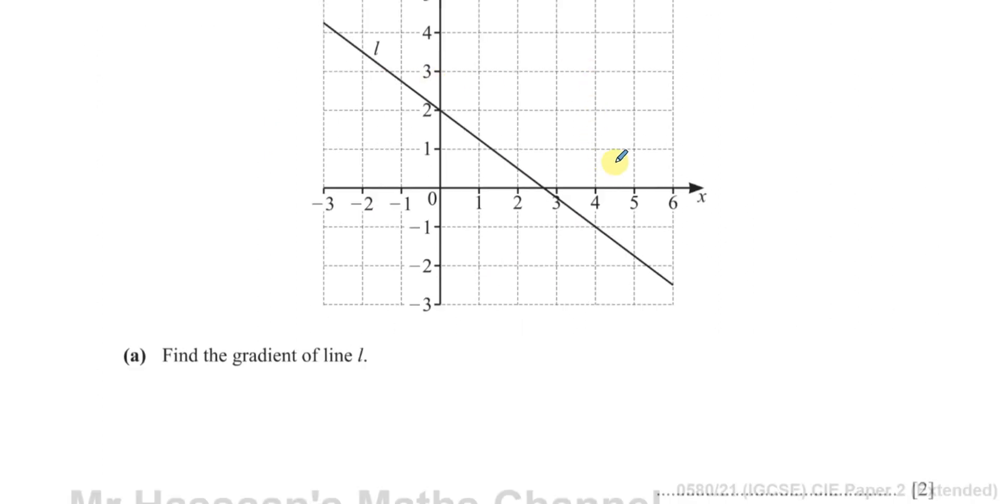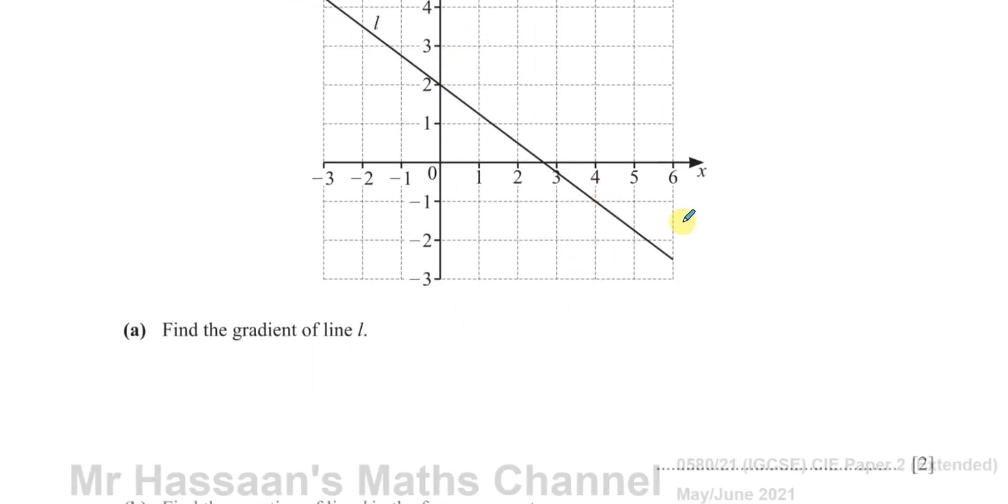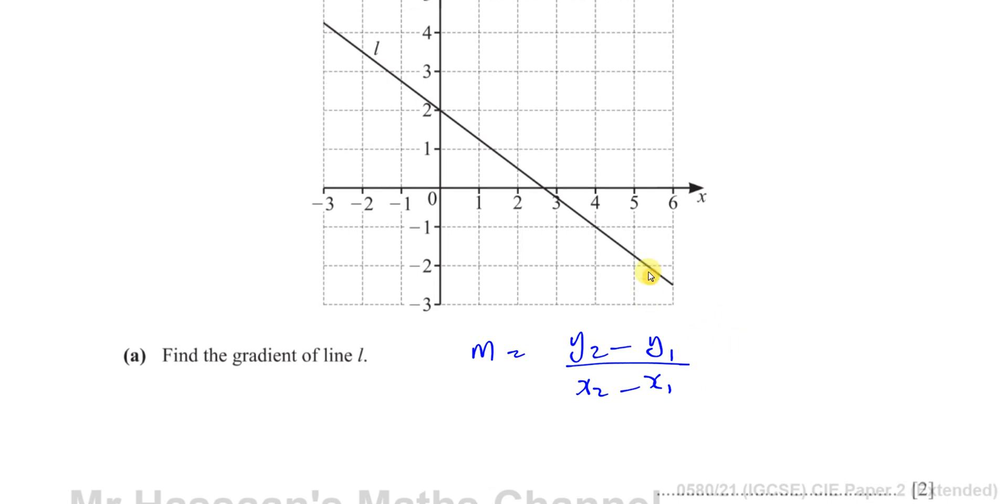So the first part of the question says, find the gradient of line L. They've given us a diagram showing the line L and we have to find its gradient. The gradient of the line can be found by choosing any two points on the line and seeing how the graph changes. We know that there's a formula, the gradient is equal to the change in Y over the change in X. Sometimes you write it as Y2 minus Y1 over X2 minus X1.